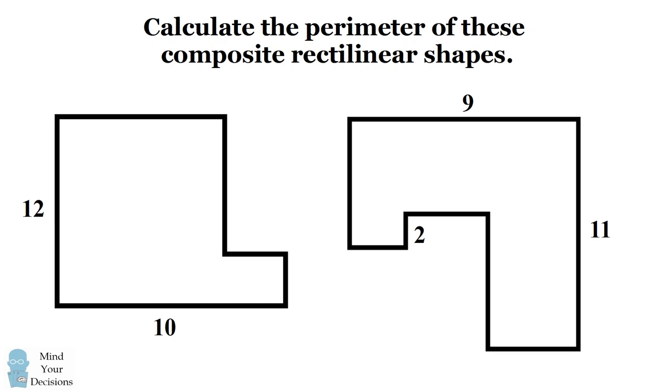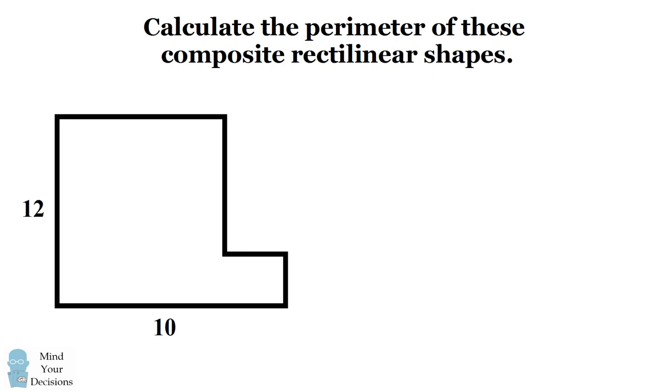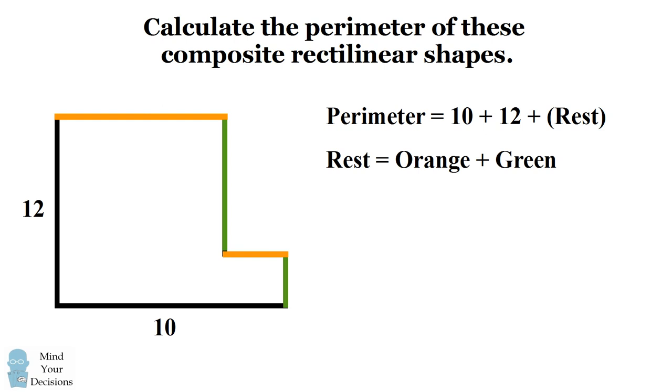Let's calculate the perimeter of these composite rectilinear shapes, starting with the shape on the left. We are only given the dimensions of two of the edges. The perimeter will be equal to these lengths plus the lengths of the unknown edges. While we don't know the lengths of these edges, we can figure out their total length. We'll color the unknown horizontal edges in orange and the unknown vertical edges in green.